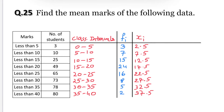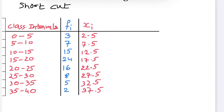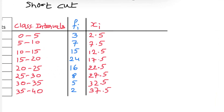Instead of using the direct method with decimal calculations, we will use the shortcut method, also known as the deviation method. For the shortcut method we need to assume a mean before finding the actual mean. Let us assume our mean to be somewhere in the middle of the data, that is 17.5.